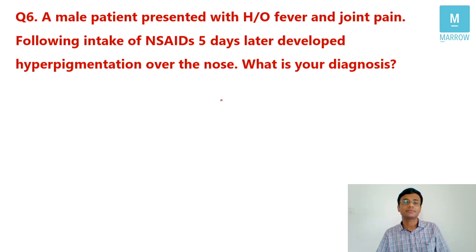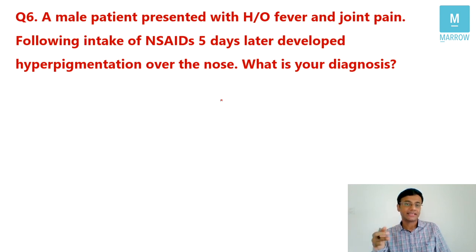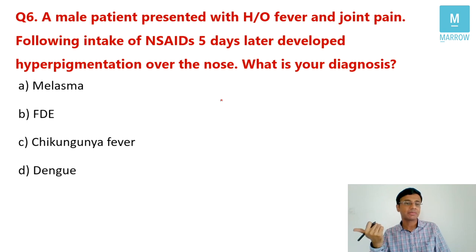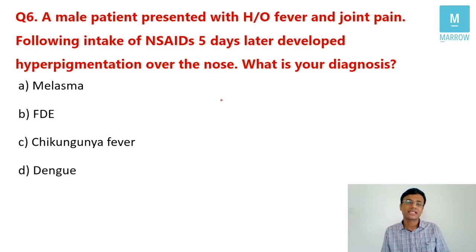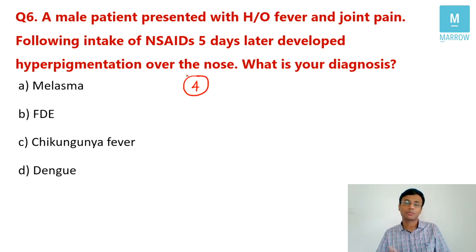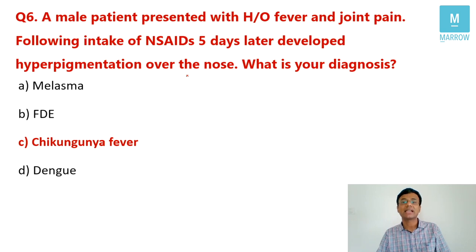Question number six: A male patient with fever and joint pain, following NSAID intake, developed hyperpigmentation on the nose five days later. Options: melasma, fixed drug eruption (FDE), chikungunya fever, and dengue. This question has been repeated four times in AIIMS exams. The correct answer is chikungunya fever.